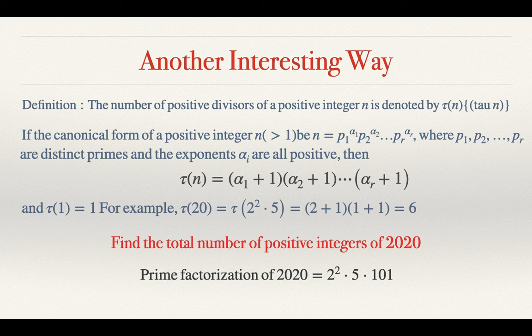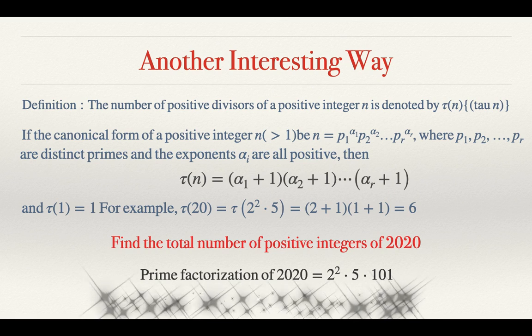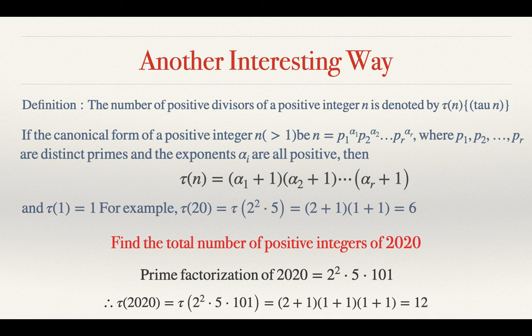Now let's apply this process for our problem for 2020. The prime factorization of 2020 is 2 squared times 5 times 101. Now tau of 2020, first we have to find the prime factorization which we have already found, which is 2 squared times 5 times 101. So for 2 squared we have 2 plus 1, for 5 it is 1 plus 1, and for 101 it is 1 plus 1, so multiplying this 3 we are getting 12.